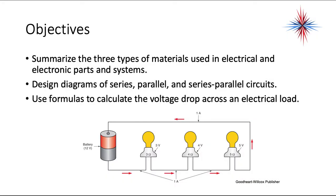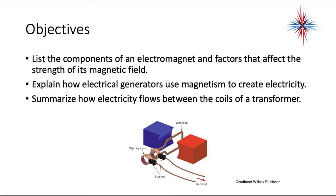We need to be able to summarize the three types of materials used in electrical and electronic parts and systems, design diagrams of series, parallel, and series-parallel circuits, use formulas to calculate the voltage drop across an electrical load, list the components of an electromagnet and factors that affect the strengths of its magnetic field, explain how electrical generators use magnetism to create electricity, and summarize how electricity flows between coils of a transformer.